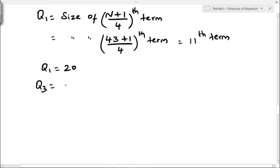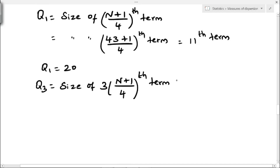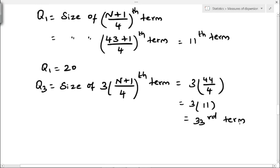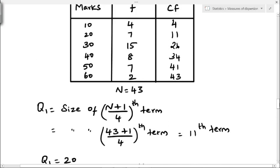For Q3, the formula is size of 3 into (N plus 1) by 4th term. That is 3 into (43 plus 1) by 4, giving 3 into 11, which is the 33rd term. Checking the cumulative frequency, 33 is not present but lies between 26 and 34. We take the higher value 34, which corresponds to x value 40. So Q3 is 40.